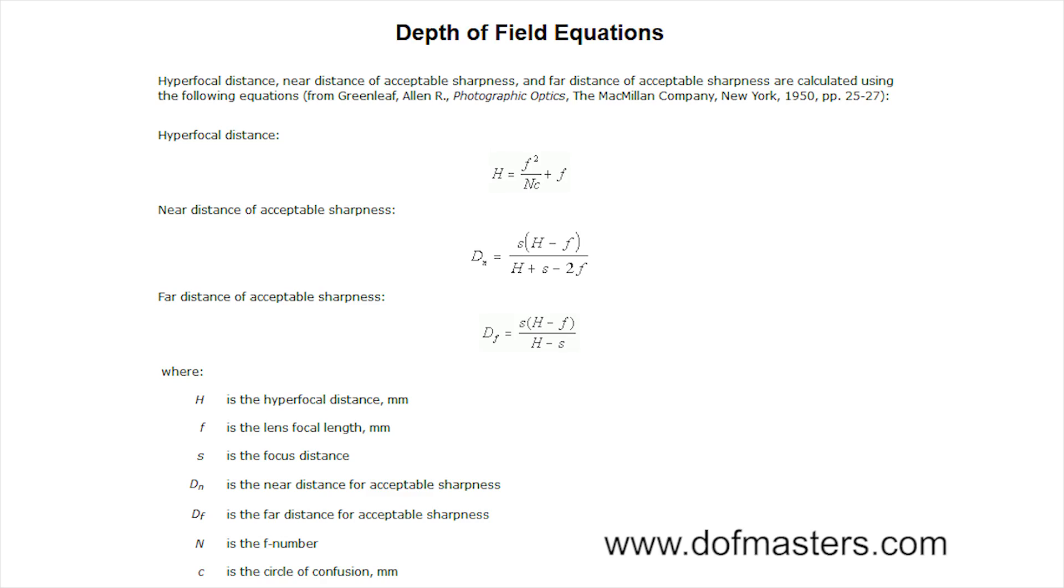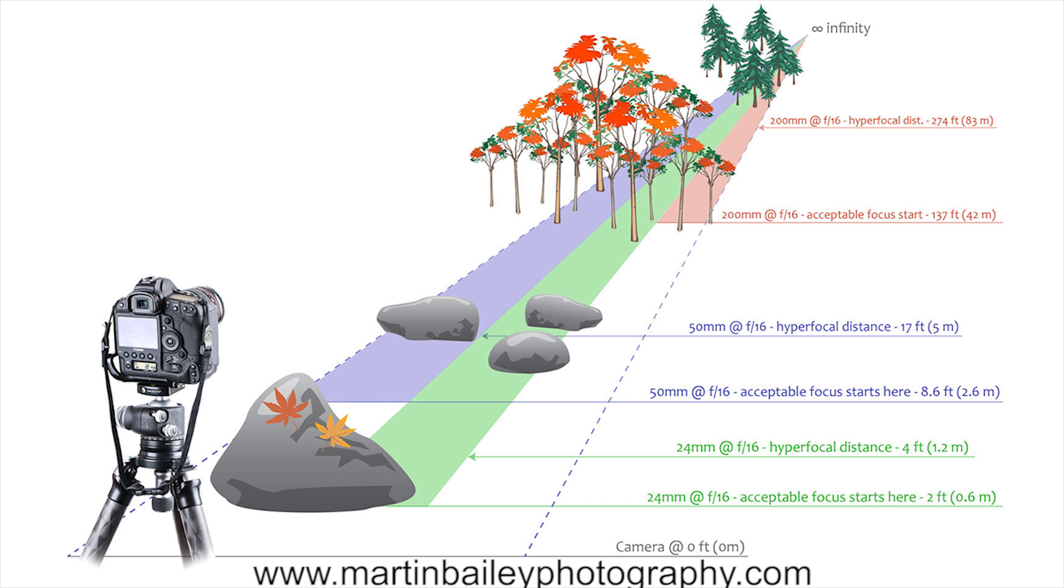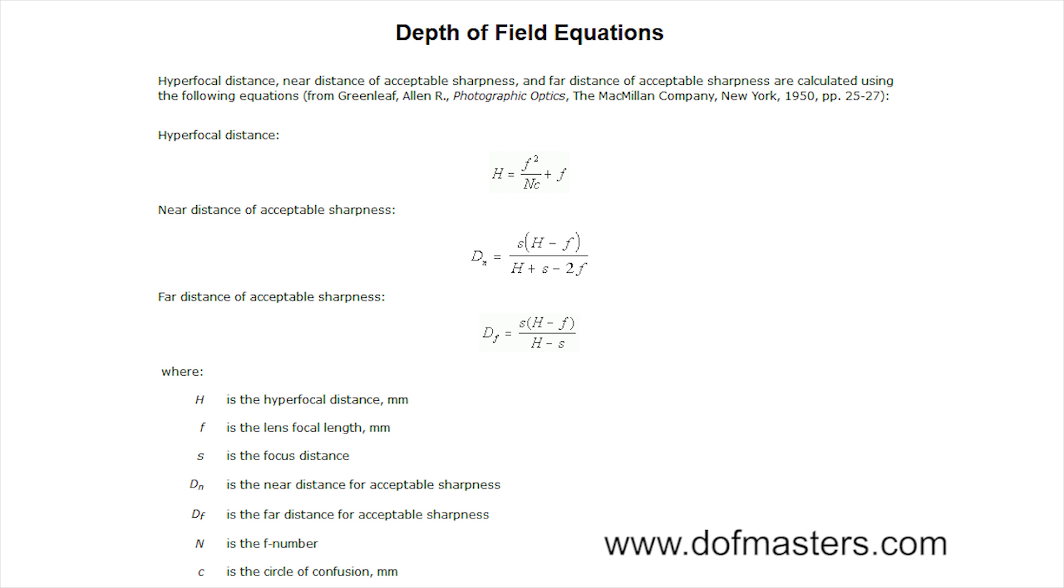Now in order to successfully calculate your depth of field range, you need to understand the equations behind calculating depth of field. For instance, you need to be able to calculate your hyperfocal distance. Hyperfocal distance is when you can set your lens focal distance to its maximum distance to create the largest or deepest depth of field. The point in which that occurs is called the hyperfocal distance.